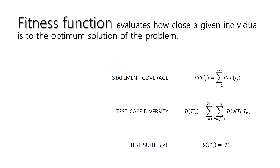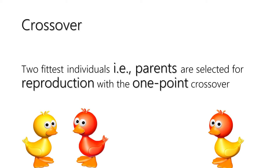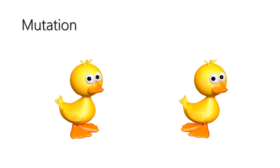During the selection step, the individuals with the better fitness function are chosen to create the new generation. Pairs of chosen individuals are then mixed in the crossover phase to create the next generation. We use the one-point crossover, in which the crossover point is randomly selected for each pair of parents. The mutation step works on a single solution and consists in a genetic mutation on the individual. This phase guarantees variability in the population and prevents premature convergence.